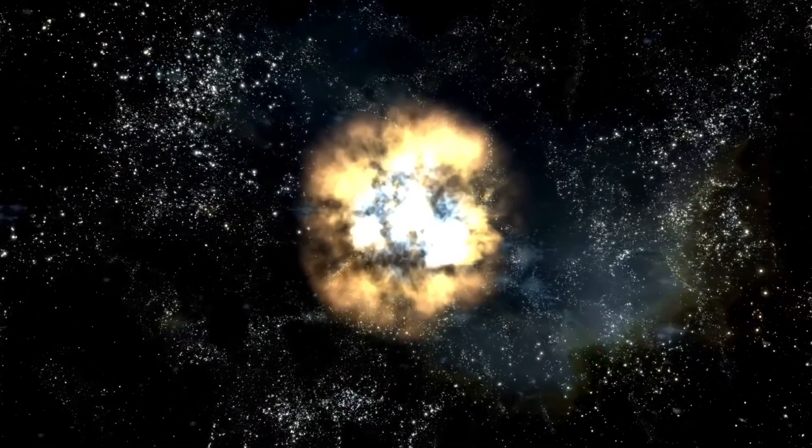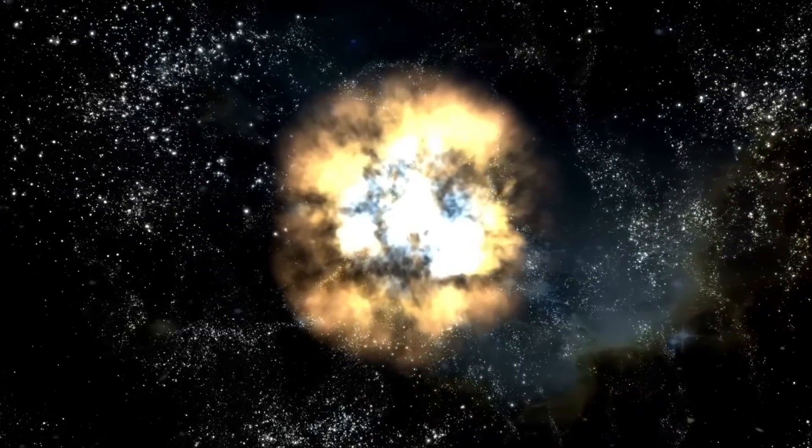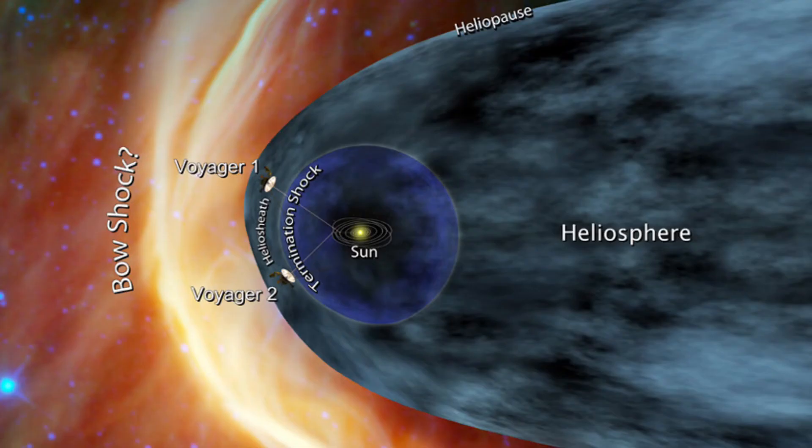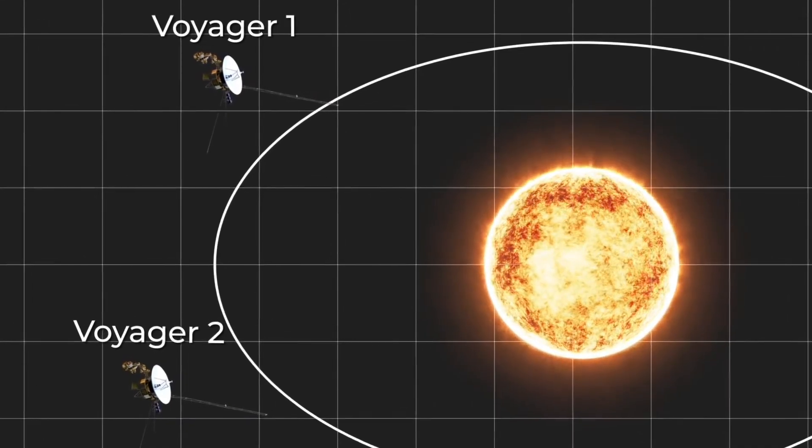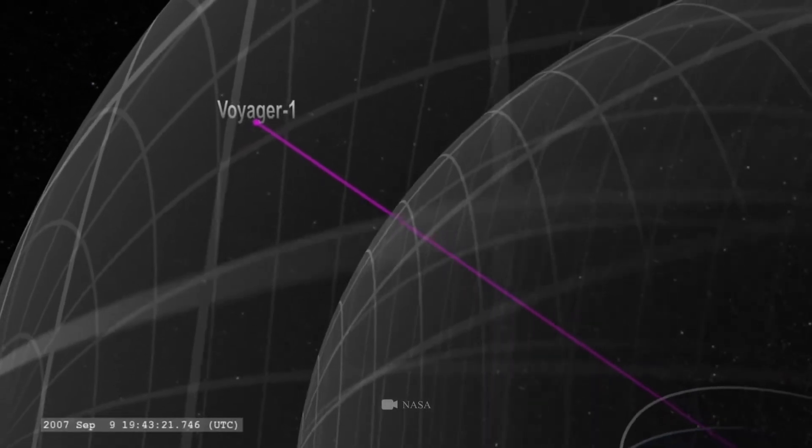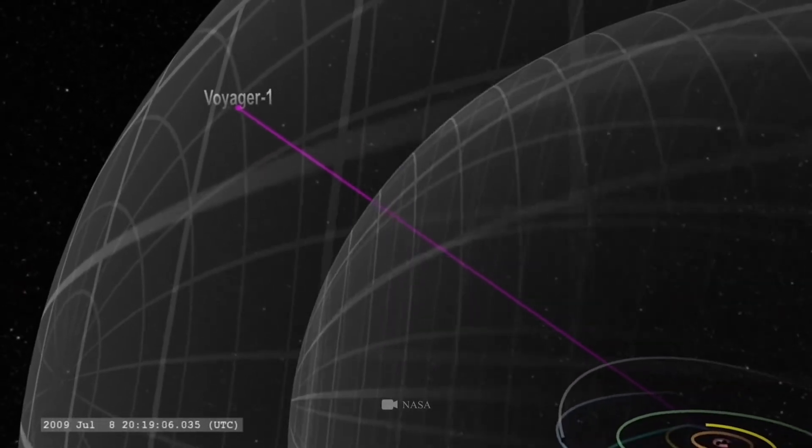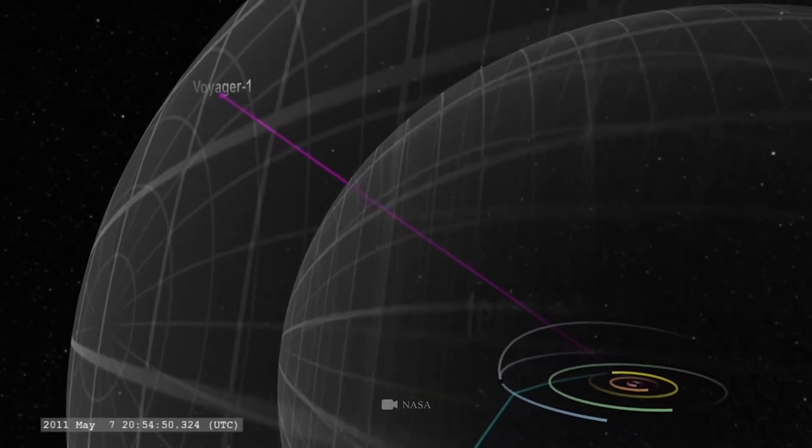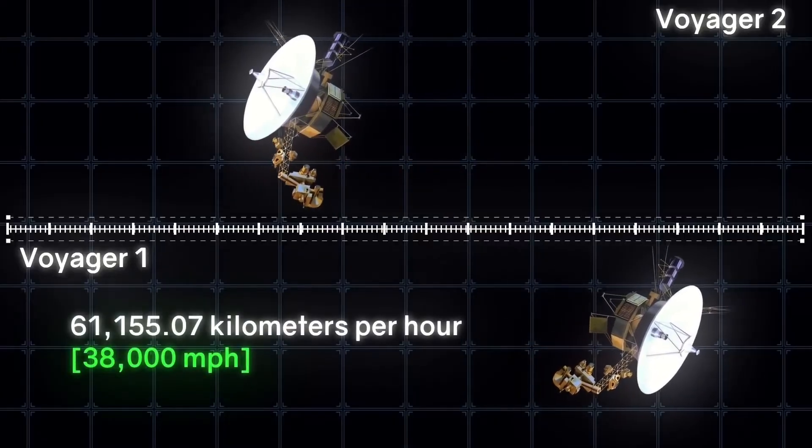Before we end this video, let us answer your one final question and the reason why you clicked on this video. Where are Voyagers 1 and 2 now? You will be relieved and surprised to hear this, but the Voyagers are operational even after 44 years. According to reports, Voyager 1 has traveled 153 Earth's sun distances and is moving forward at 38,000 miles per hour.